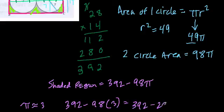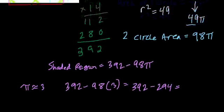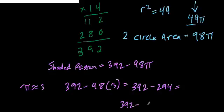392 minus 294, how would you do that in your head? That's a tough one. I would subtract 300 and then add 6. So 300, 392 minus 300, that's 92, and then we have 6 more, right. So that's 98, right. Yeah, okay, very nice.